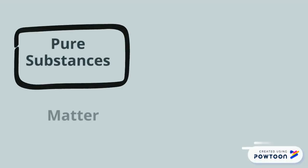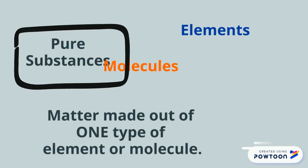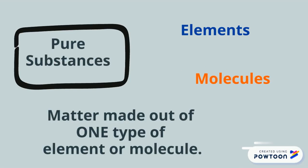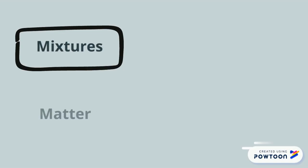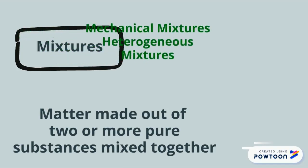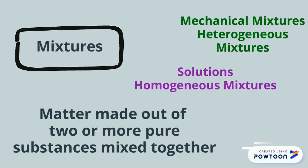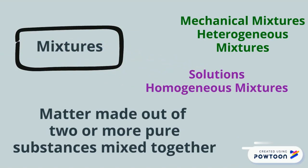Pure substances are matter made out of one type of element or molecule — elements like aluminum, gold, and copper, or molecules like water, salt, and sugar. Mixtures are matter made out of two or more pure substances mixed together. Mechanical or heterogeneous mixtures are where you can see the different parts, like dirty clothes in a laundry basket. Solutions or homogeneous mixtures have particles that blend together so it looks like a pure substance, like ketchup.